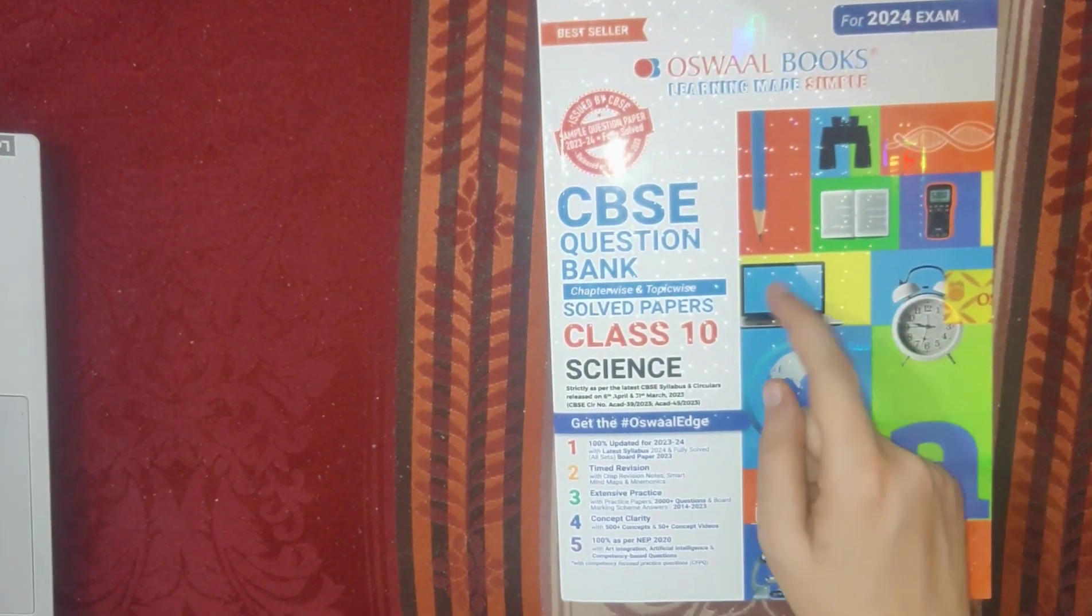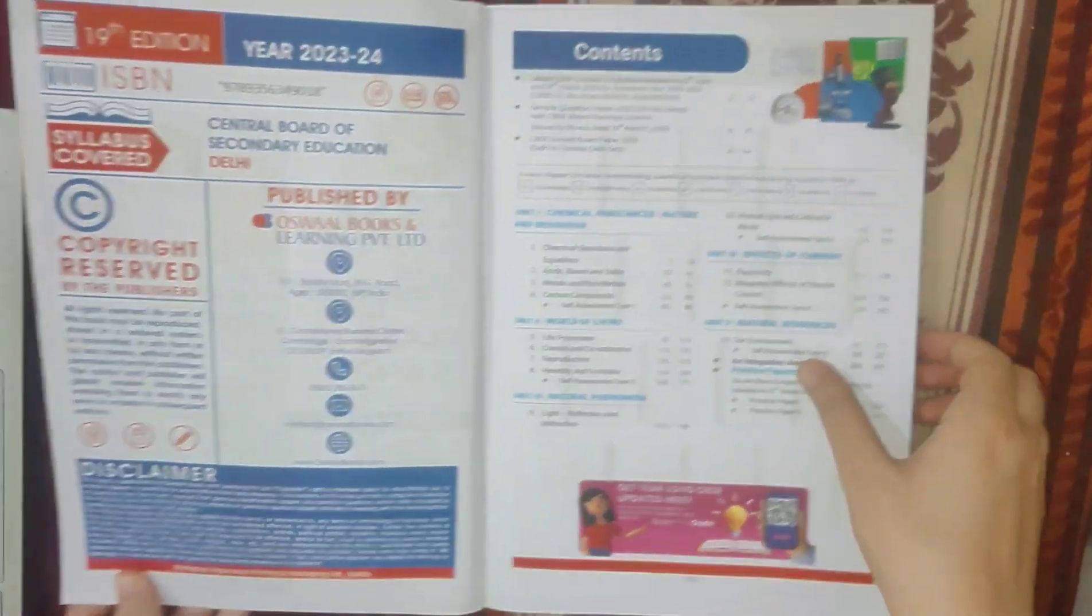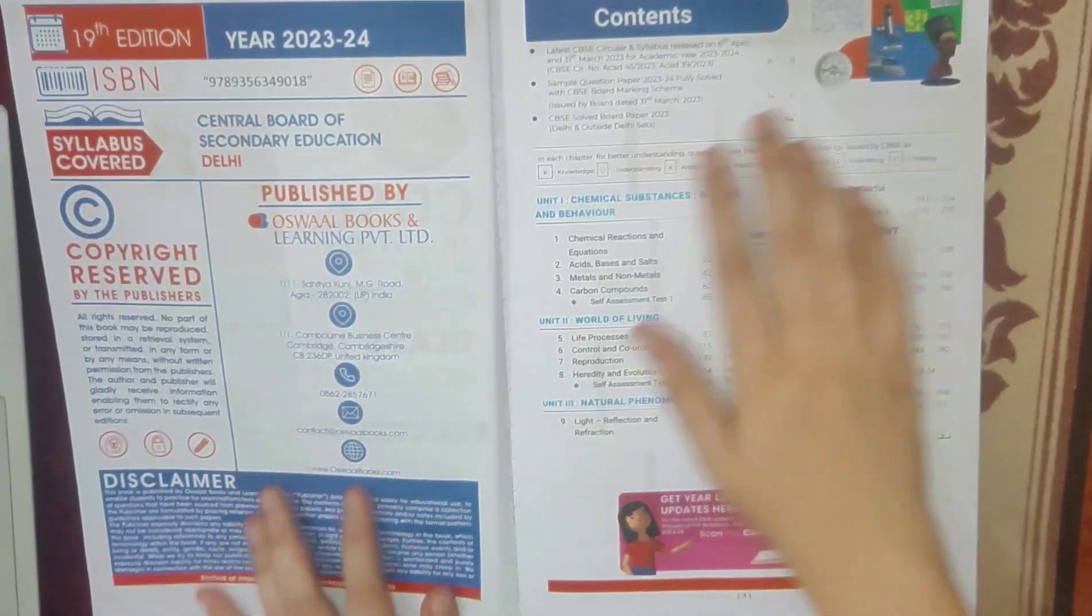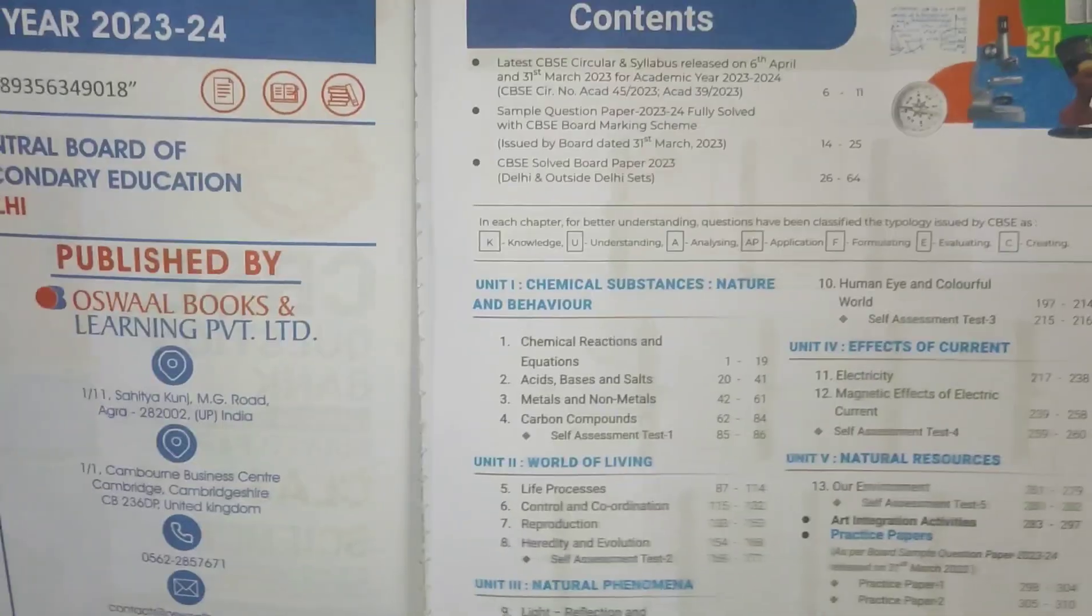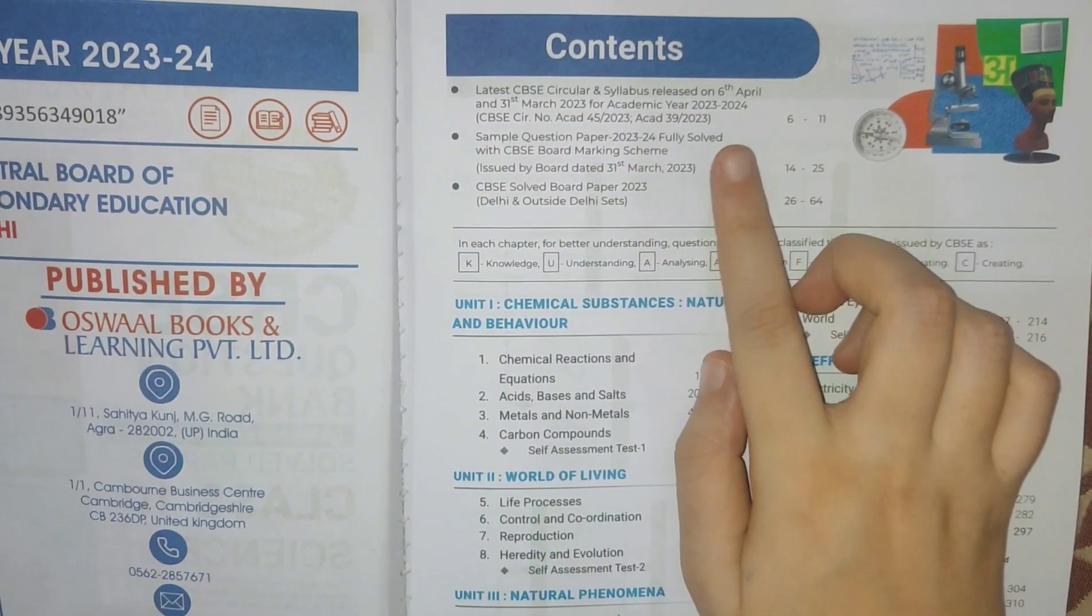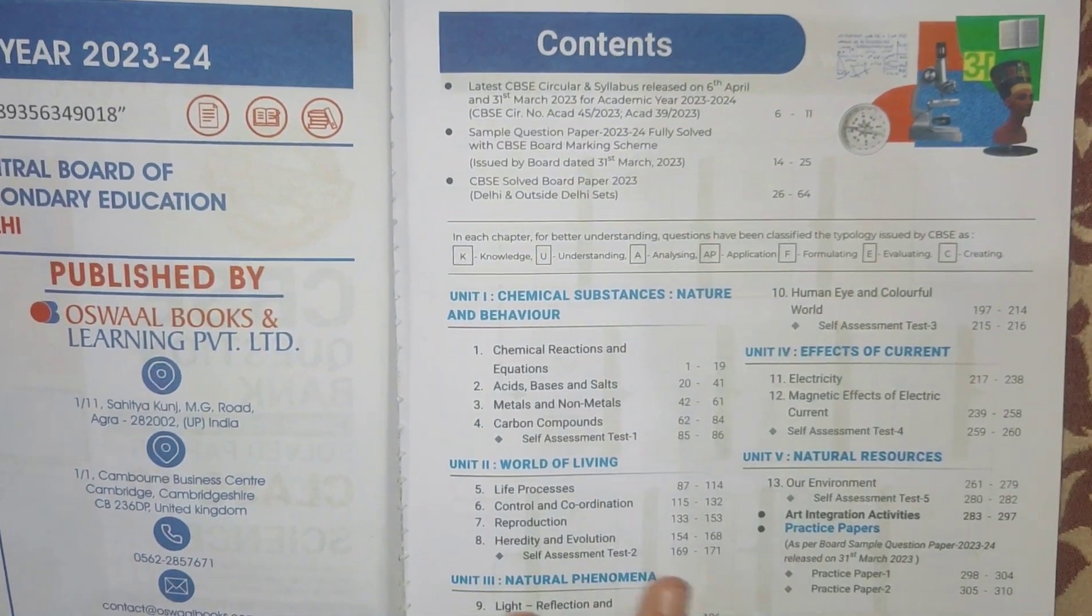Welcome to the complete review of this book by Oswaal Class 10 Science. Now let's get to the contents. When I look at the contents here, I can see that there are question papers in the beginning. First is the sample paper, and later the sample paper along with the marking scheme.